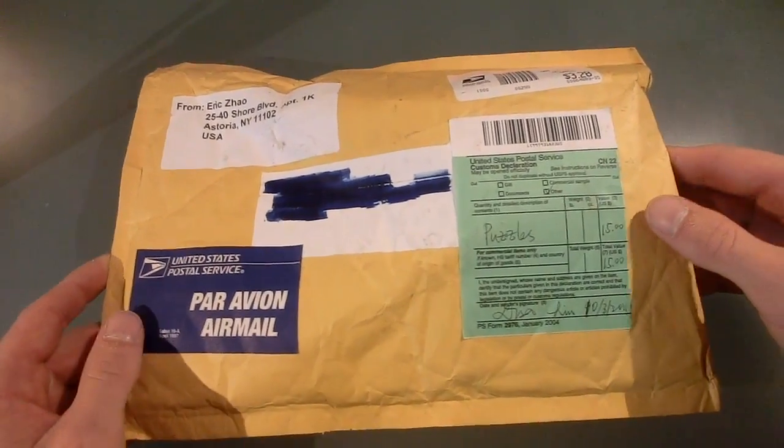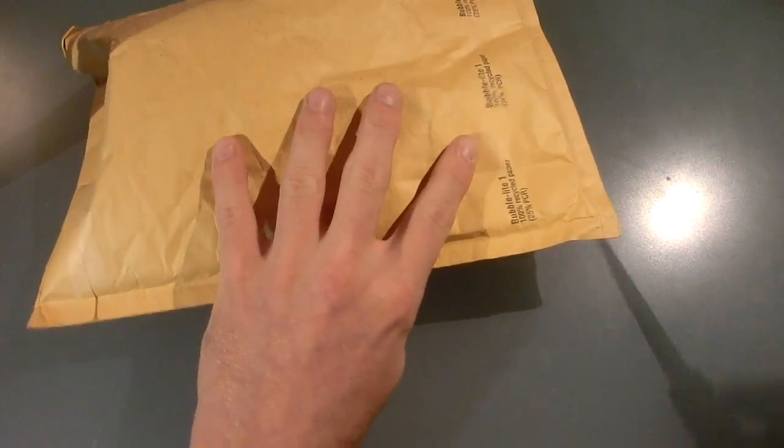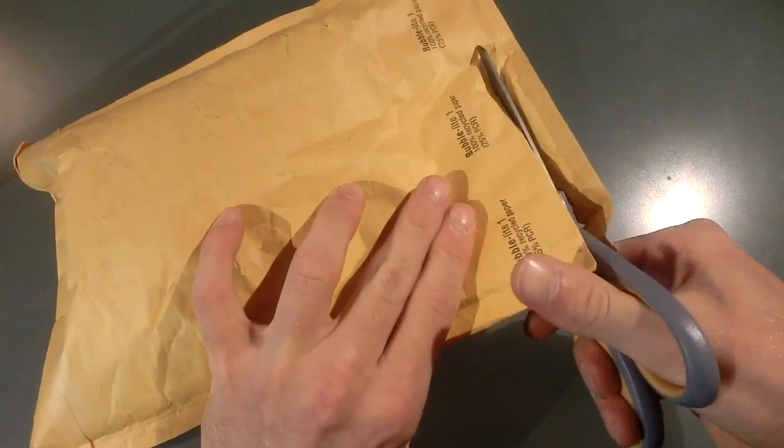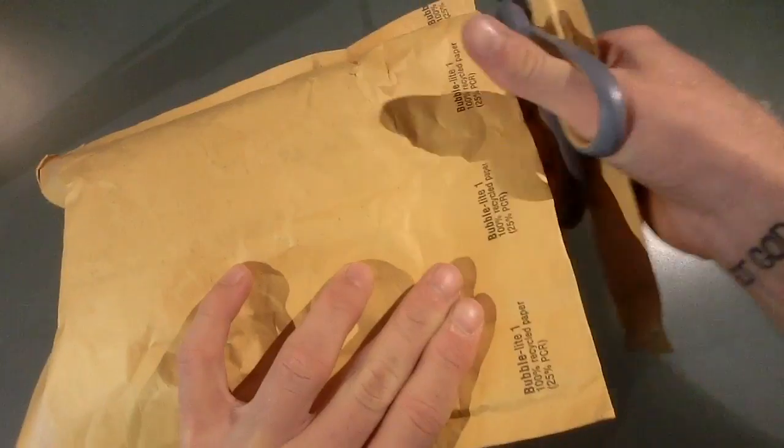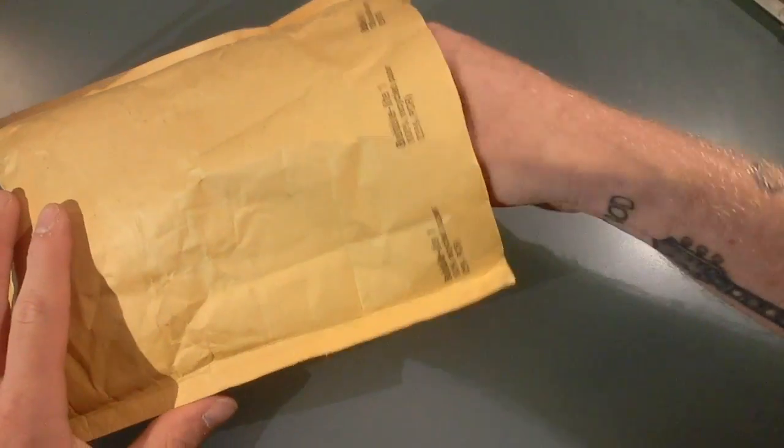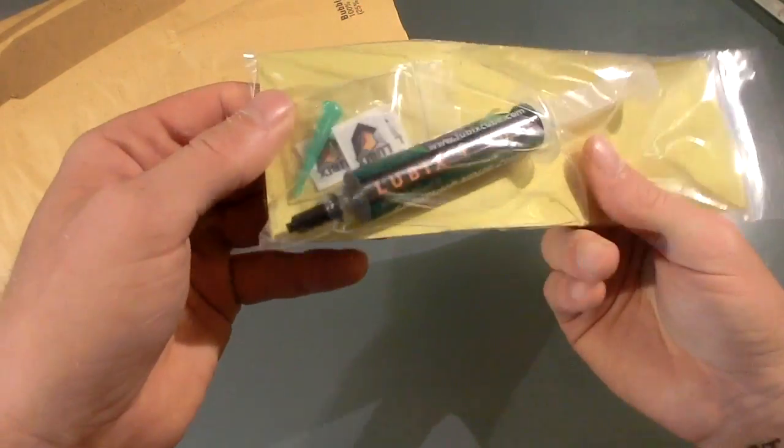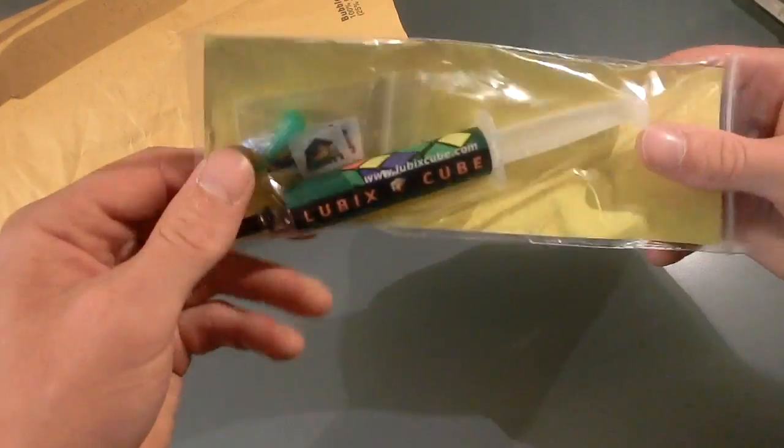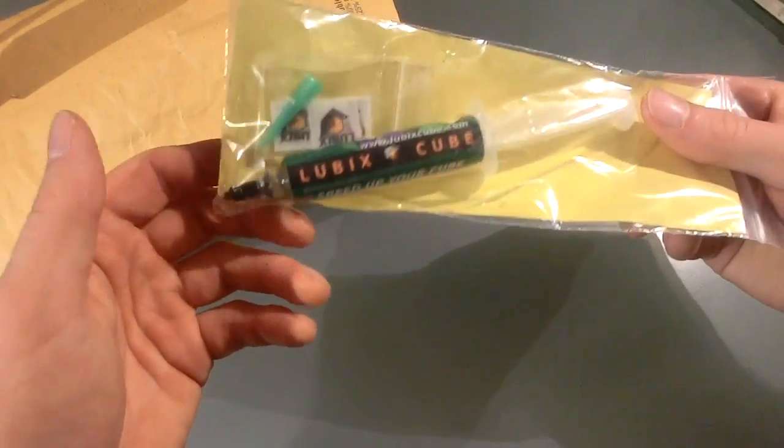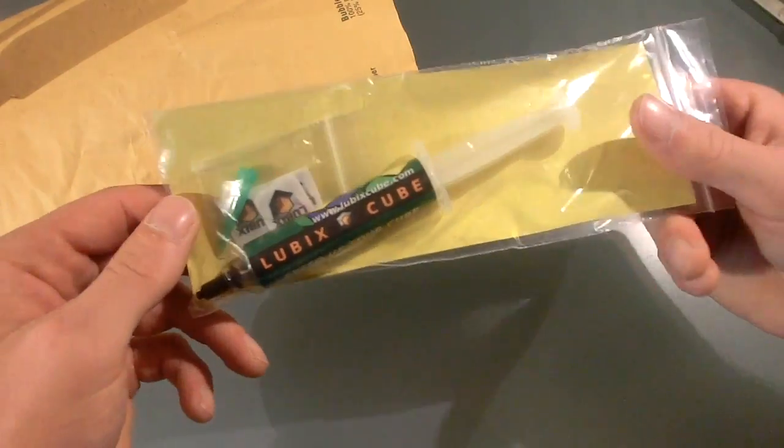And the shipping was very cheap. I think it was only like three or four dollars. Anyways, let's get into this and see what we got. Inside we have 20cc of Lubix. This is an 8cc. I think there's 8, 4, and 2. But this is 8. This is the largest one you can get. It's around $20.